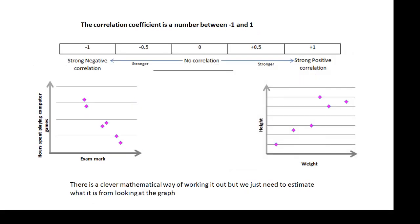Now the correlation coefficient is a number between minus one and one. If there's no correlation, then it's zero. Strong negative is minus one. Strong positive is plus one. Now, there is a very clever mathematical formula for working it out using standard deviation and stuff. We don't need to know that.